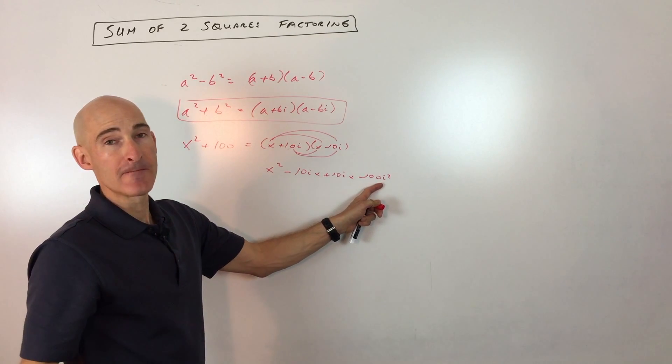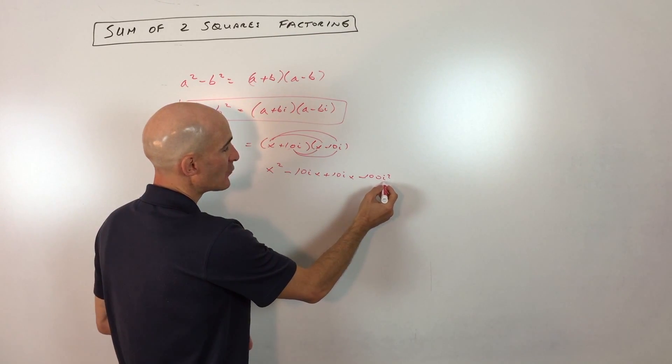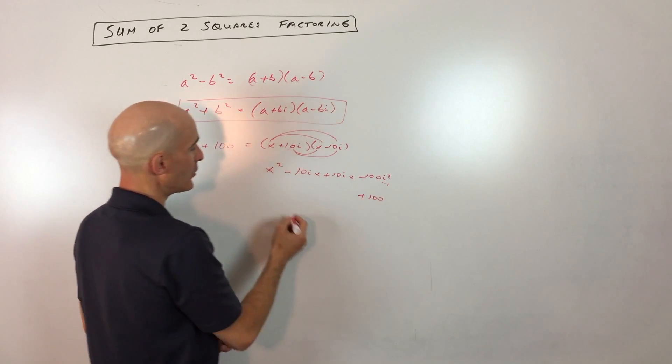Now i squared, you know from previous videos and from your classes so far, that i squared is negative 1. So we have negative 1 times negative 100, which is positive 100.